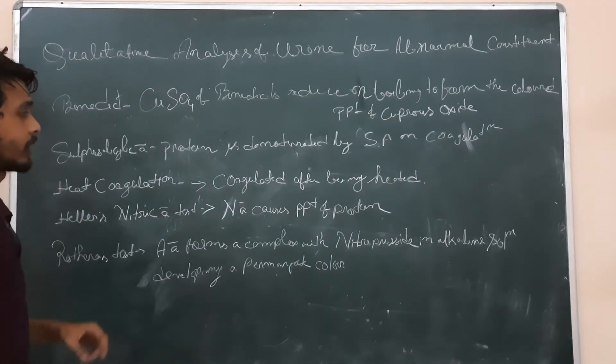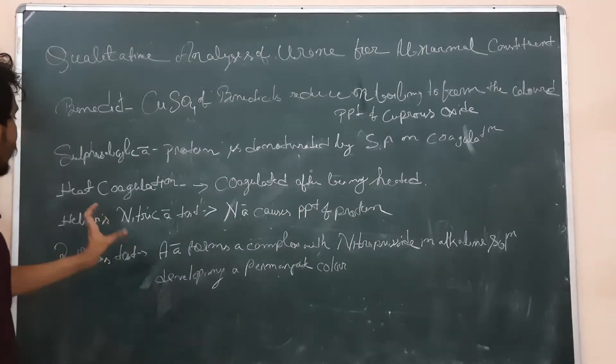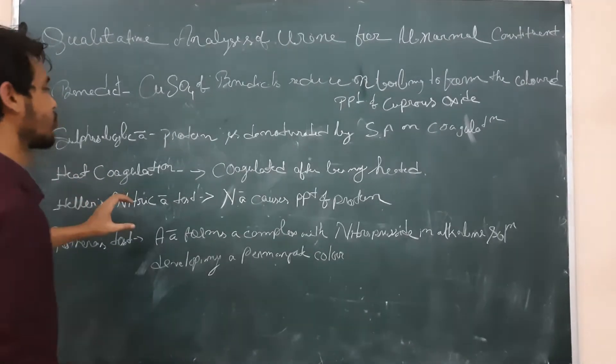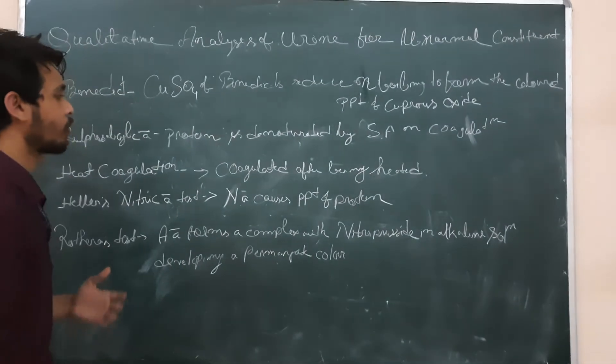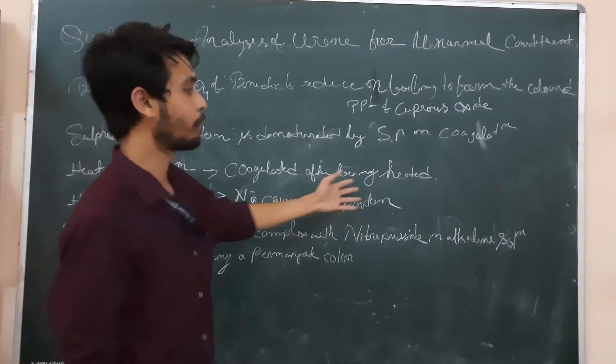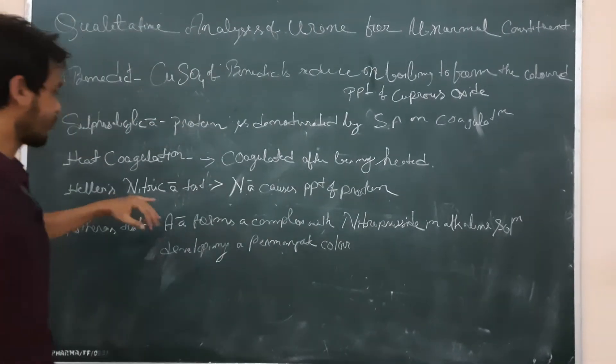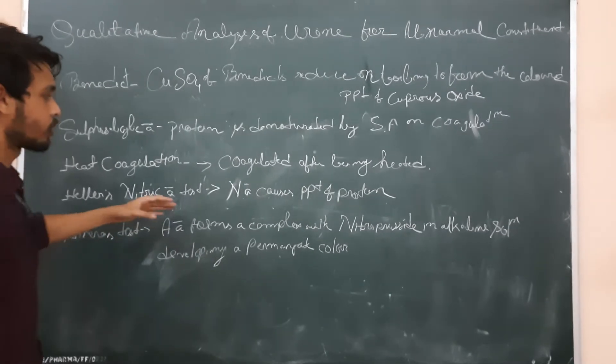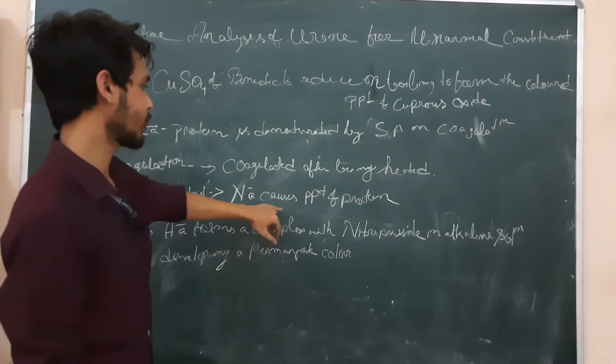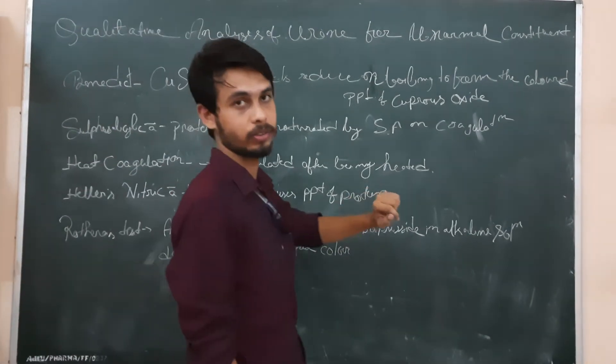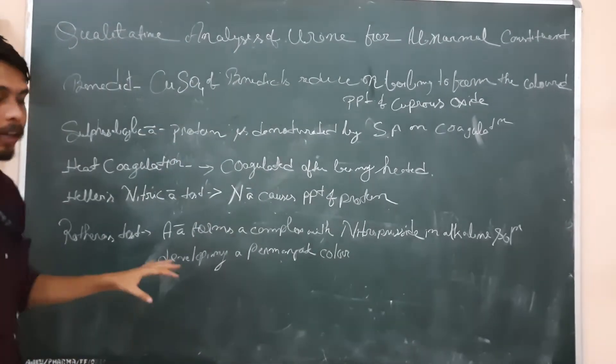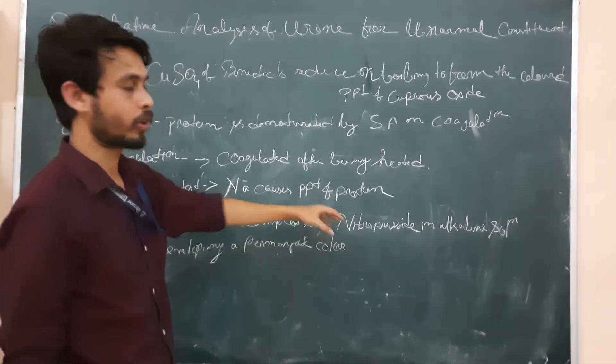Next one is heat coagulation test. So from the name, you can recognize that we are going to heat this solution. So this protein, any type of protein will be coagulated after being heated. After that, we have the Harris nitric acid test. So obviously we are going to use nitric acid. So nitric acid causes precipitation of the protein. So by that, we can detect that by the precipitation of protein, any type of protein.